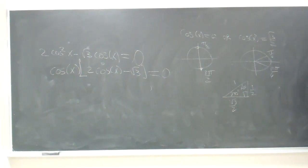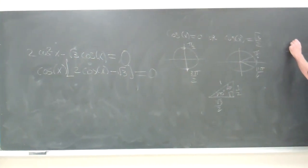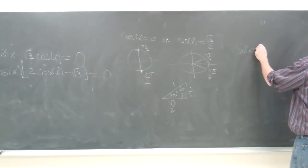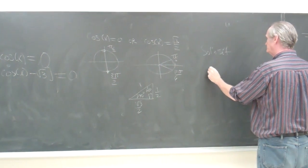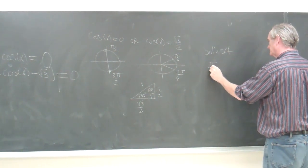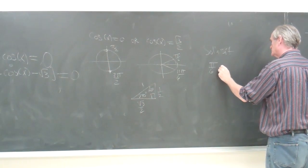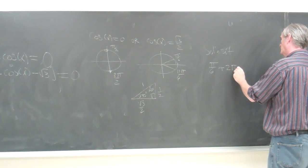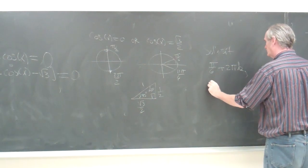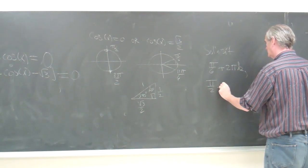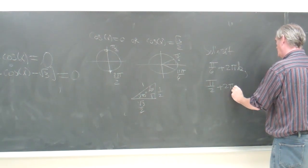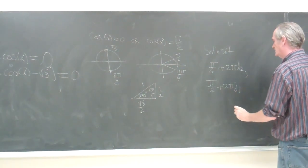Meanwhile, let's go ahead and write these down. So our solution set is going to be π/6 plus 2kπ where k is an integer, and π/2 plus 2jπ where j is an integer.